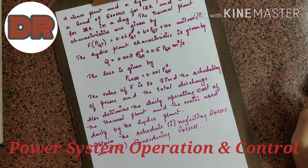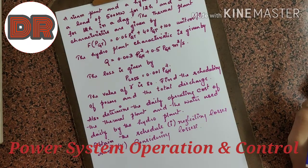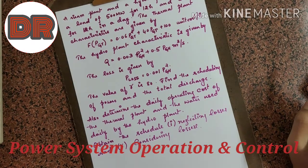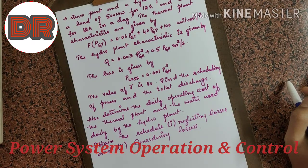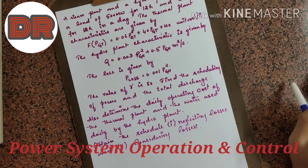Hello everyone. In the previous video we discussed Algorithm 3, that is short term hydrothermal scheduling using penalty factor. Let us do one numerical today based on the same algorithm. Those who have not seen that video, the link is given in the icard above — you can check it up. Let us see the numerical for Algorithm 3.